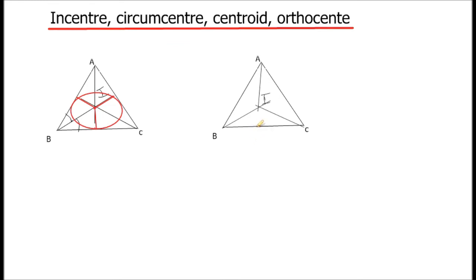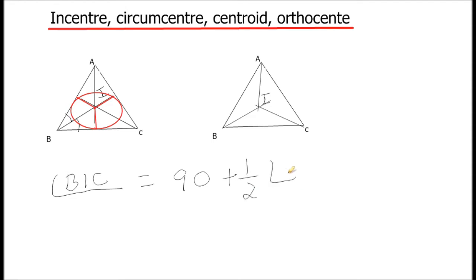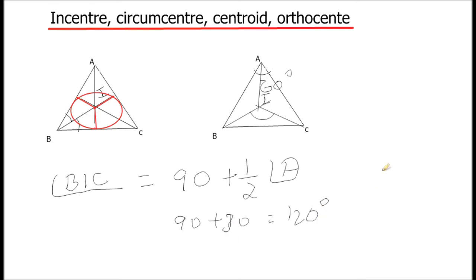Here we have some important properties with in-center. If angle A is known, we can find angle BIC. We will have a lot of questions in SSC on this. Angle BIC is equal to 90 plus half of angle A. So if angle A is 60 degrees, then angle BIC is 90 plus half of 60, which is 90 plus 30, giving 120 degrees.